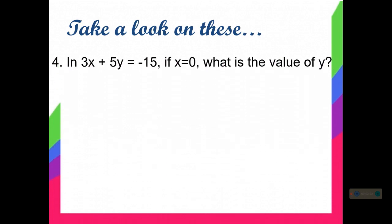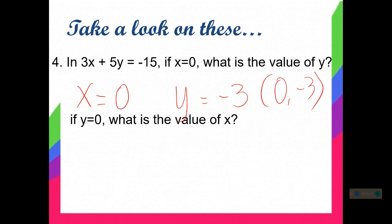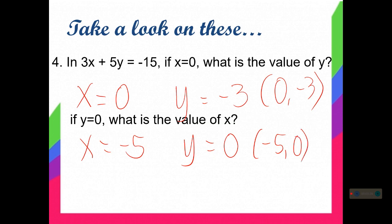For the last, in 3x plus 5y equals negative 15. If x equals 0, what is the value of y? So we have y is equal to negative 3. So the ordered pair will be 0, negative 3. Next, if y is equal to 0, what is the value of x? So we have negative 5. So you will obtain the ordered pair negative 5, 0.